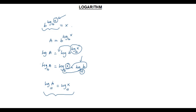Two logarithms are equal with the same base 10. If two logarithms are equal with the same base, we can equate the arguments, so we get a = x. The value of a is x, and a is the value of the given expression. Therefore, b to the power of log x to the base b is equal to x. The important condition is that the base of the expression and the base of the logarithm must be the same.